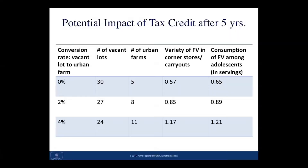This table presents a couple of different scenarios of the potential impact of the tax credit after five years. Assuming a 2% conversion rate of vacant lots to urban farms per year, we see an increase in the number of urban farms by three to a total of eight, and a reduction in vacant lots from 30 to 27. This is associated with increases in the variety of fruits and vegetables available at corner stores and carryouts and an increase in consumption of fruits and vegetables among adolescents. At a higher conversion rate of 4% per year, these numbers increase further.